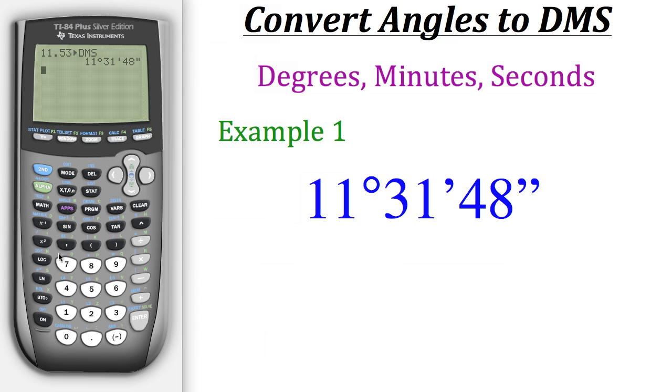Now let's do one more example. This time we have 150.87 degrees, and we also want that to be in degrees, minutes, and seconds.